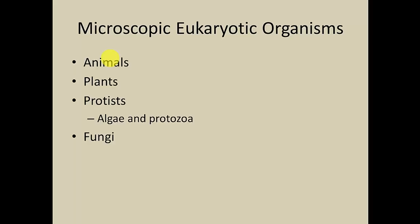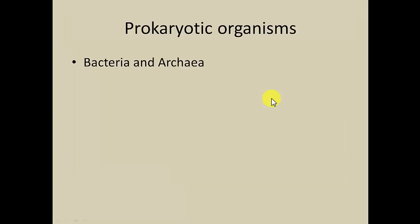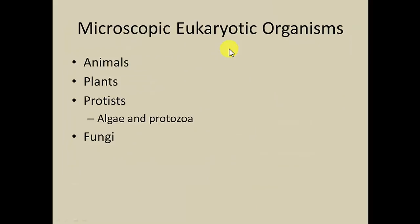Prokaryotes are fairly specific. Eukaryotes are very, very broad. Even though animals, plants, fungi, and protists are very different at the macroscopic level, at the microscopic level they actually have a lot in common — they're actually very similar in their microscopic structure. That's why they're all in the same grouping as eukaryotes.